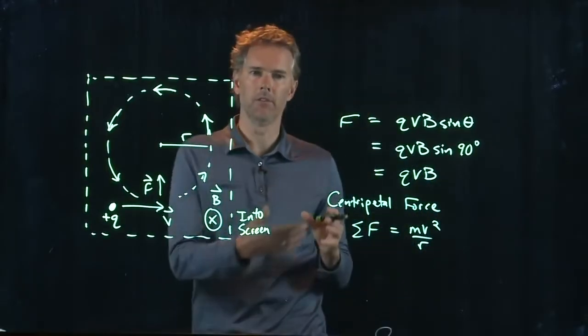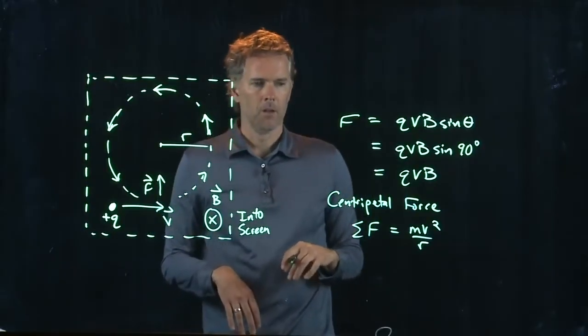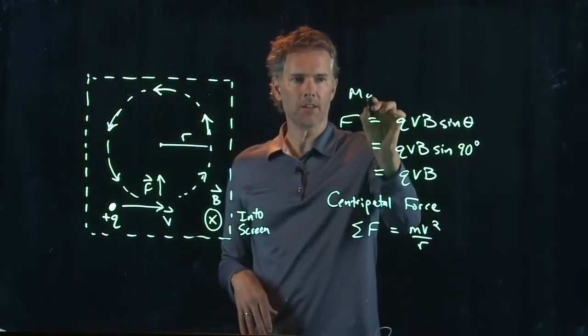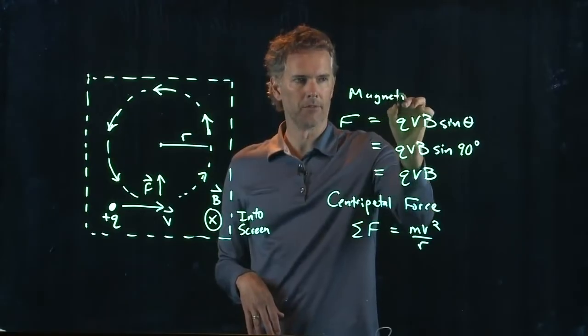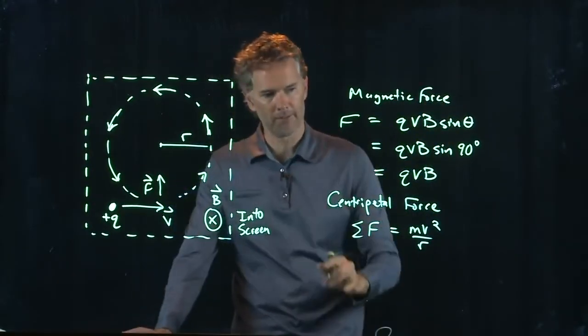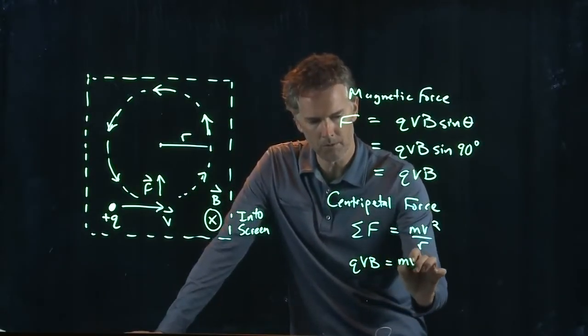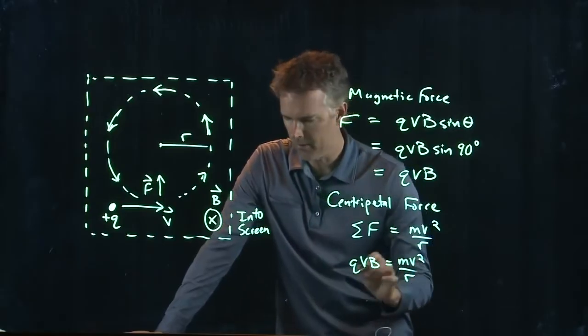Right? This is uniform circular motion. The centripetal force is MV squared over R. But the only force is this magnetic force. Okay? And so,